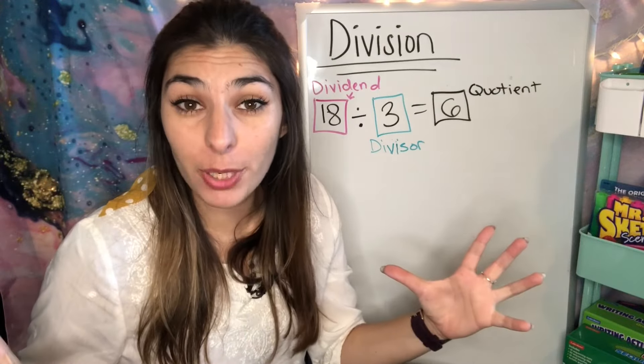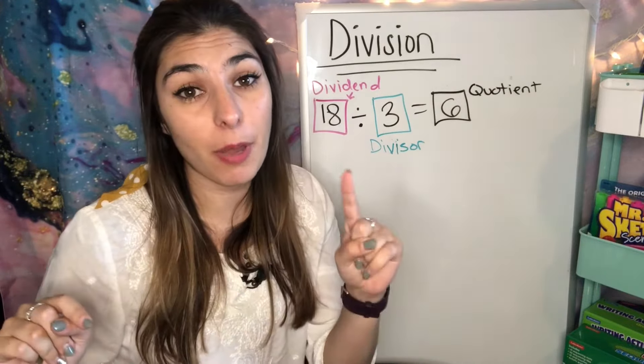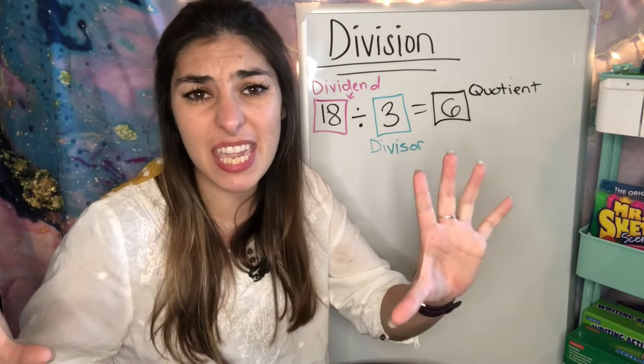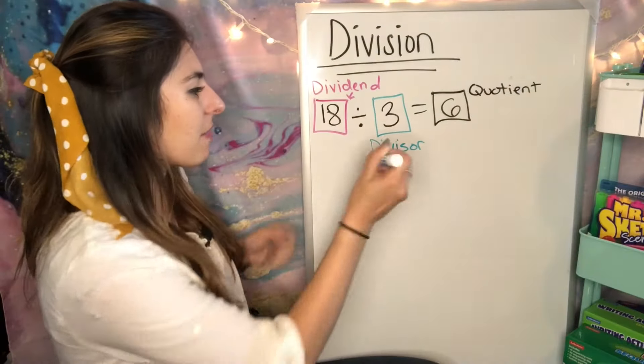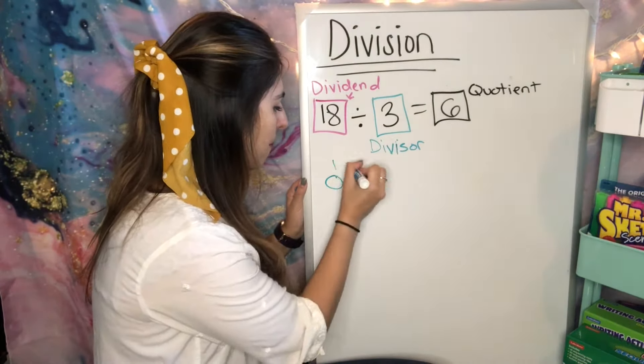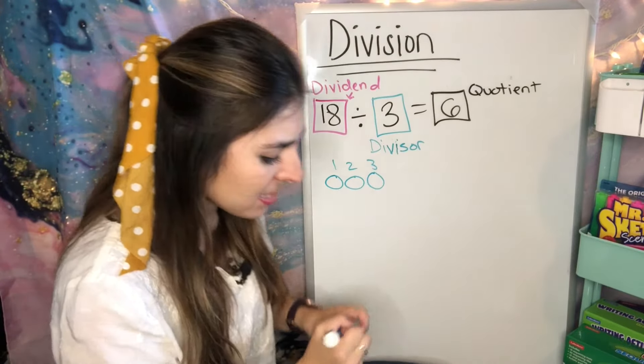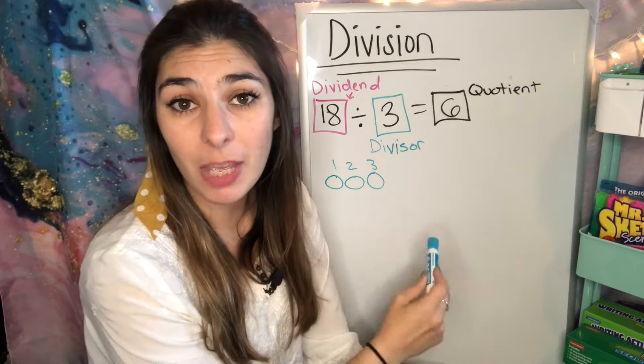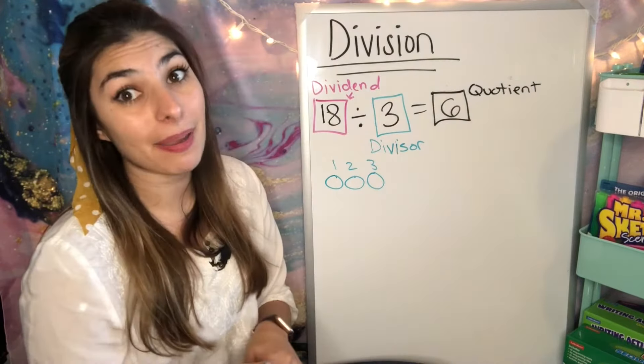So those are all my strategies for common core division. Now, just like I showed you my bonus tip for multiplication, I'm going to show you my bonus tip for division. It is the same thing, we're just doing it a little differently. I see that my divisor is 3, so that's how many circles I'm going to do. 3. And this time, instead of knowing how many lines to draw, I'm just going to count them and be writing the number. Then my lines will come after.